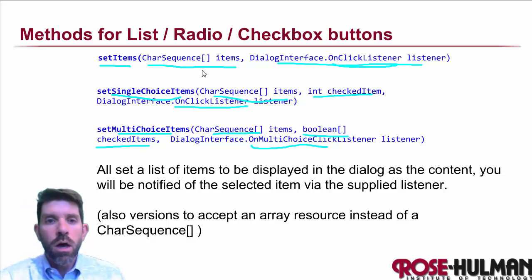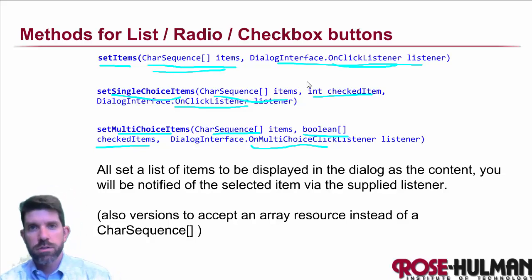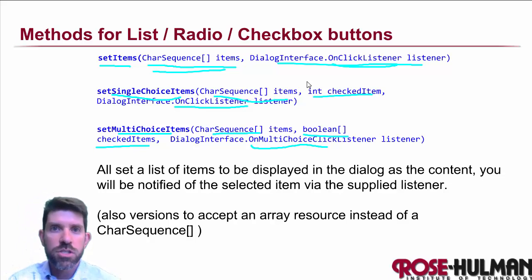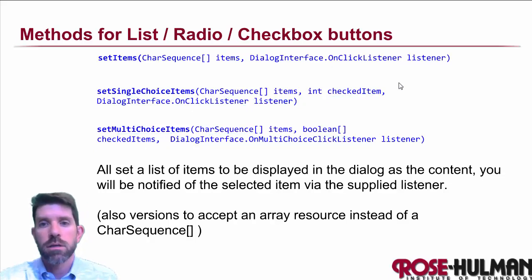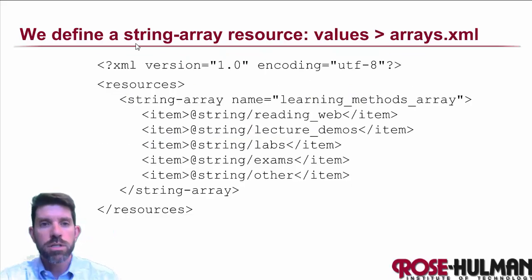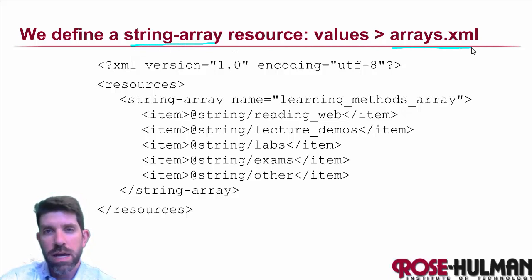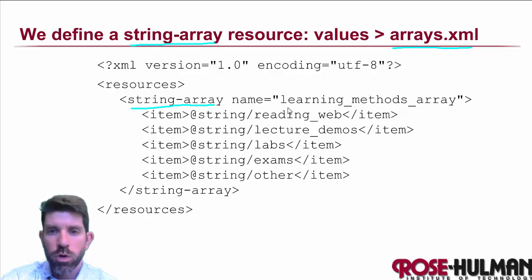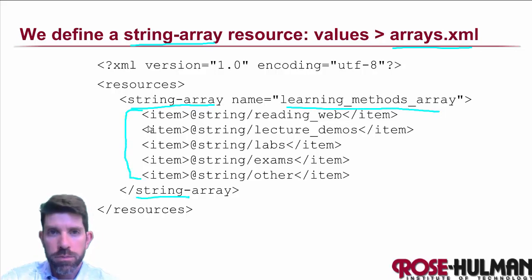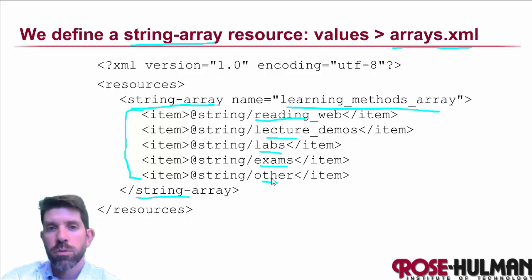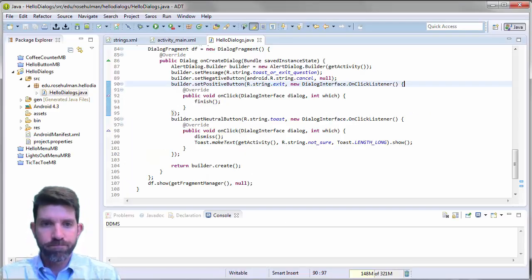Whenever we've had strings in Android we've created string resources, and Android also allows the same for arrays of strings. We're going to define a string-array resource, put it in arrays.xml, and call it learning_methods_array. It will contain a list of items — strings corresponding to the different learning methods we'll ask our user about.